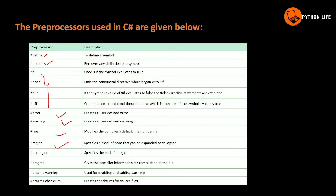If you want to use a region, we will minimize the code. End region specifically marks the end of the region. Pragma gives compilation instructions for the file — if you want to run out of the file, we will minimize the execution instructions.